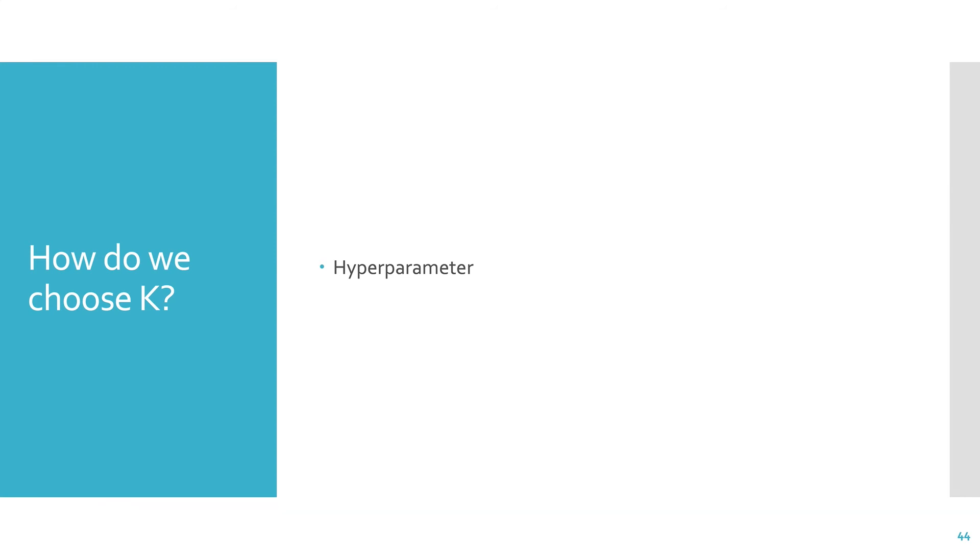So k is a hyperparameter. This is something that the programmer has to choose. Usually, we'll choose it based on some held-out set of data. So we'll use the validation data to decide what to use for k.